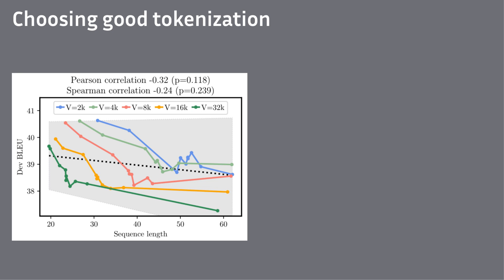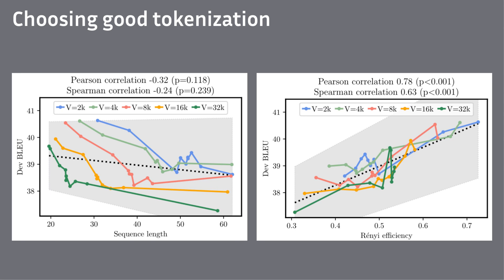On the x-axis, we have the tokenized sequence length, which was our first shot at a tokenization metric. We can see that there is some trend — the longer the sequences, the worse the performance — so it is not a completely bad predictor. However, with the same setup, if the x-axis is our efficiency metric, that seems to be a much better predictor of performance.